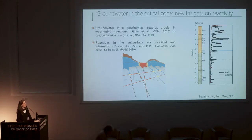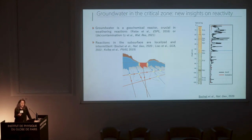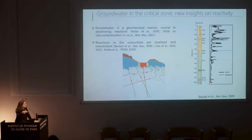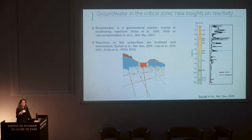The reactions that take place in the subsurface are often very intermittent and localized. What you see on the right is repeated measurements of oxygen contents in a well. Depending on the moment where we do the measurements, we see completely different patterns — inputs of oxygen in the groundwater, or no inputs of oxygen at all. Based on these intermittent inputs, we can see that the reactions derived from the input of oxygen in the ground are very localized. In this fractured aquifer context, the reactions are localized at places where fractures intersect.